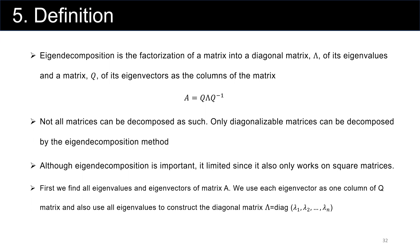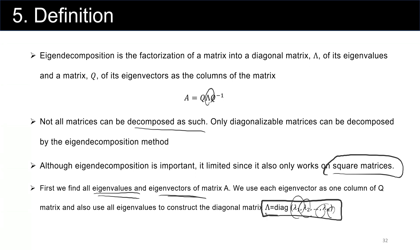Not all matrices can be decomposed this way. Only diagonalizable matrices can be decomposed by the eigen decomposition method. Also importantly, it is limited because it only works on square matrices. To perform eigen decomposition: first, find all eigenvalues and eigenvectors; then construct the diagonal matrix of eigenvalues; and build the Q matrix where each column is one of the eigenvectors.